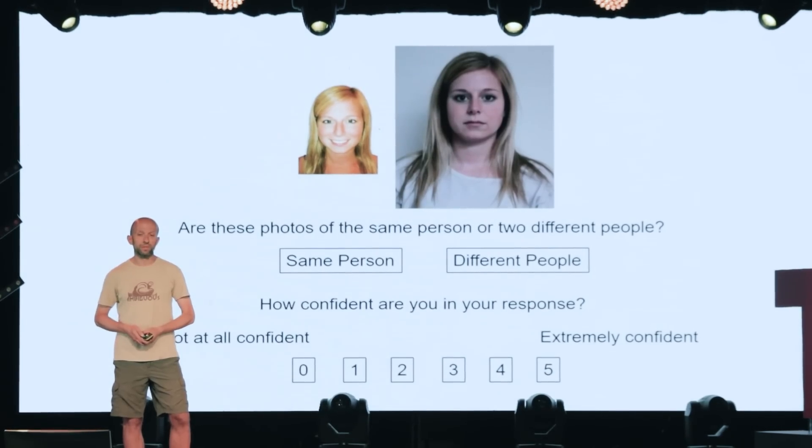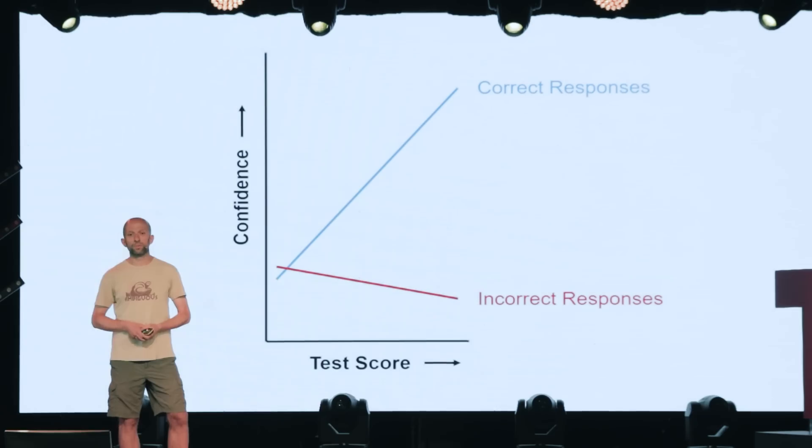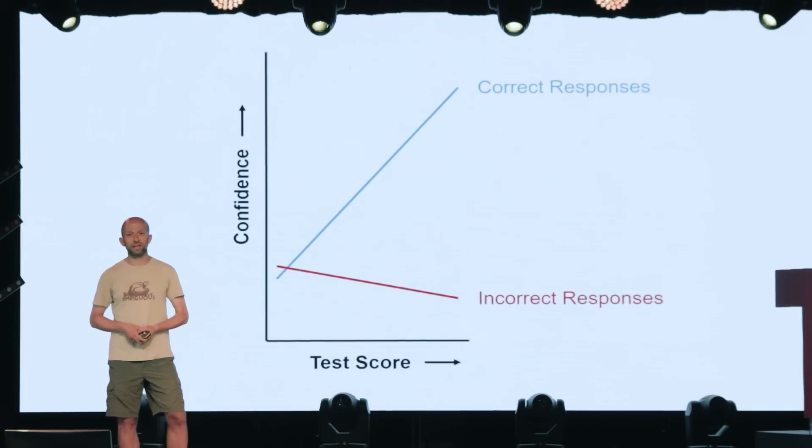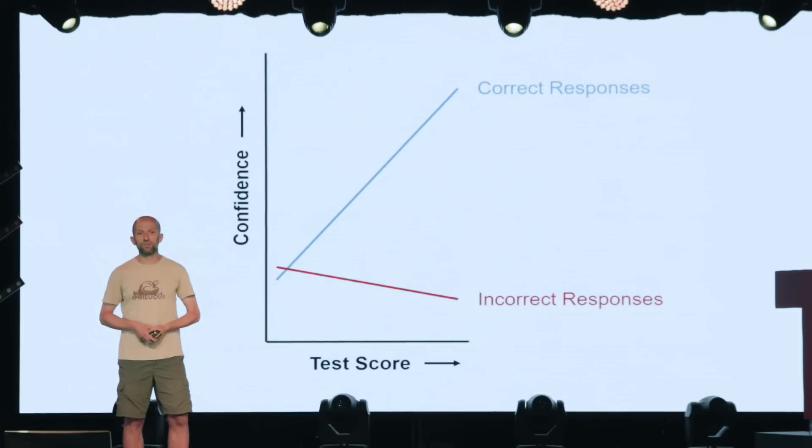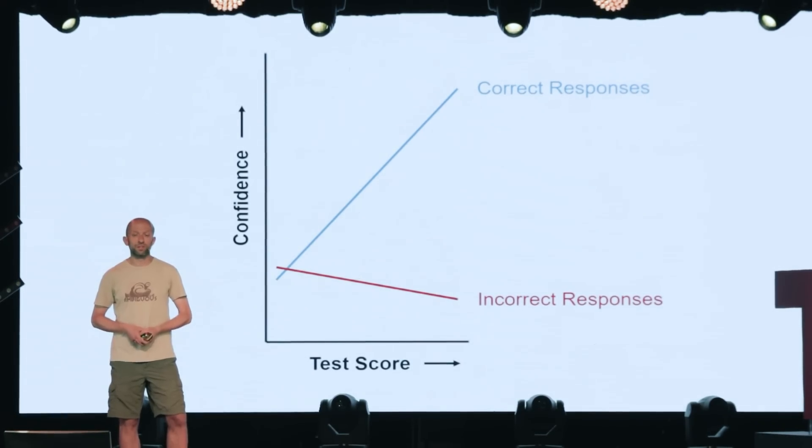So, let's have a look at how people did. Now, I think this pattern is particularly fascinating, but also fairly intuitive. Let's start with the red line, which represents people's confidence in their incorrect responses. So, as you can see, it doesn't matter how good people were at the test overall, represented by their score on the x-axis at the bottom there. People were approximately the same in terms of their confidence when they were incorrect. Now, what's interesting is the blue line, which represents confidence when people were correct in their decisions. As you can see, the best performers on the test were much more confident in their correct responses in comparison with their incorrect ones. So, they showed good metacognitive insight.